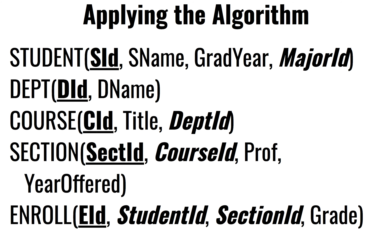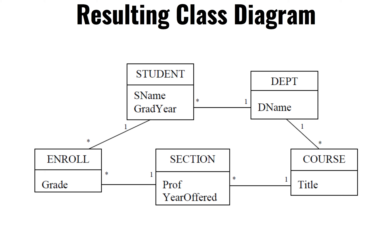There are no foreign keys that are also primary keys in this schema, so we don't have a zero-to-one anywhere — it's either a one or a star. The Department has no foreign keys; only other tables refer to it through foreign keys. So on the Department side it's always ones. The Course and Student tables are referring to the Department, which is why they have a star.